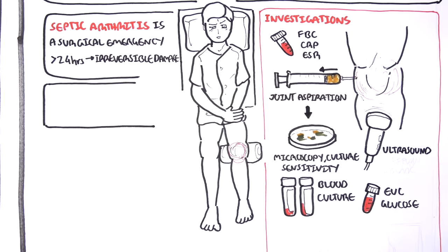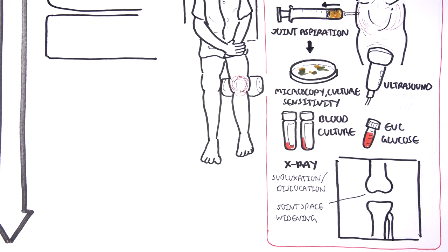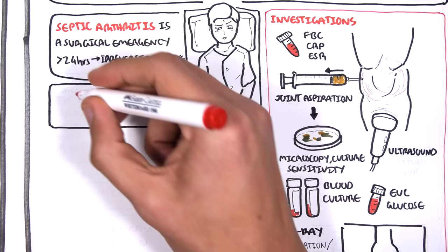Finally, imaging including ultrasound and X-ray can also be done. X-ray may reveal subluxation or dislocation of the joint, and there is joint space widening because of the swelling and inflammation occurring within the joint itself.